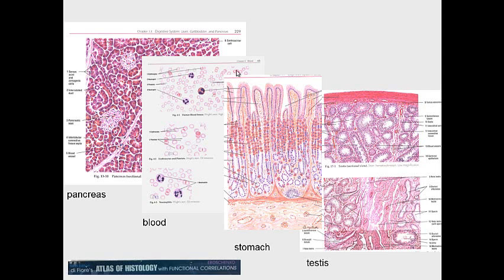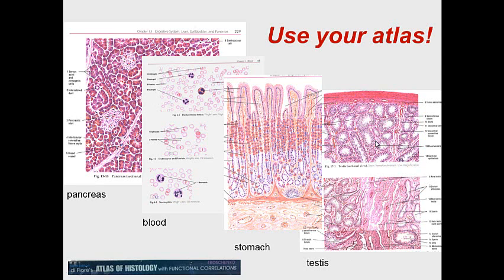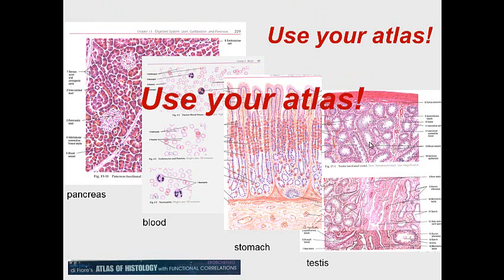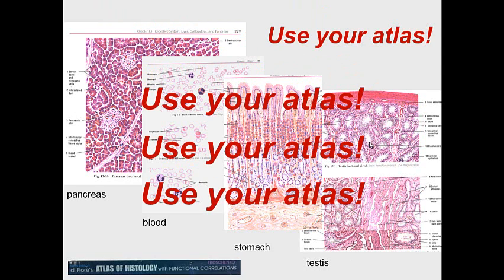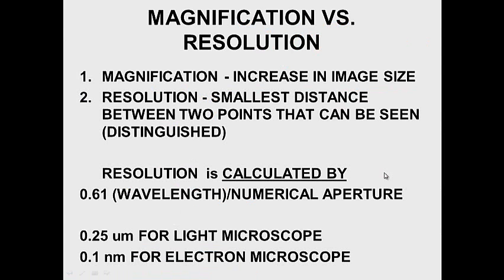These are the four basic specimens we'll be looking at today. First, the pancreas - we can see pancreatic acinar cells that produce pancreatic enzymes, and the lighter staining islet cells that produce insulin. Second, blood cells - eosinophils, neutrophils, red blood cells. Third, the mucosa of the stomach with parietal cells and chief cells. Fourth, the testis, showing cells in the tubules and Leydig interstitial cells in between. Use your atlas to observe and identify these labeled structures.